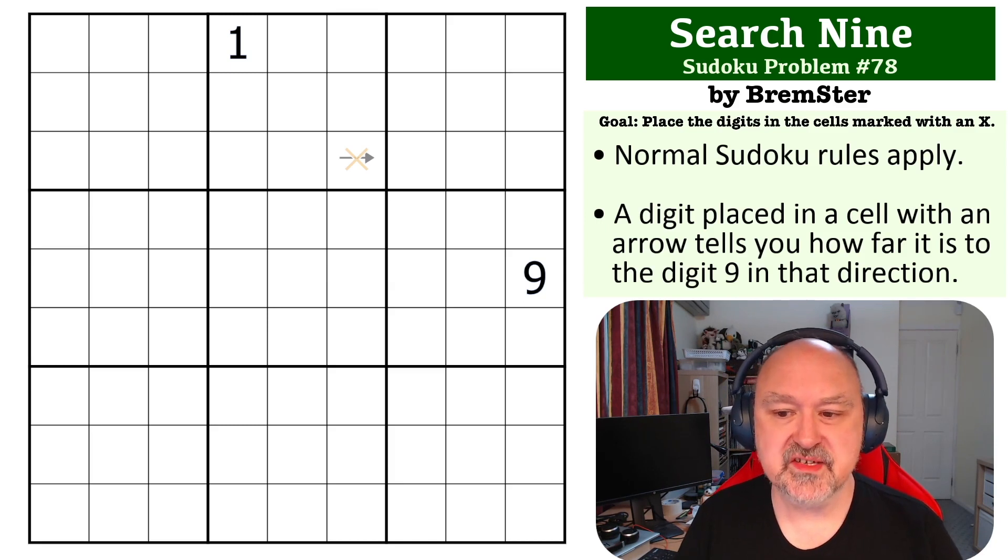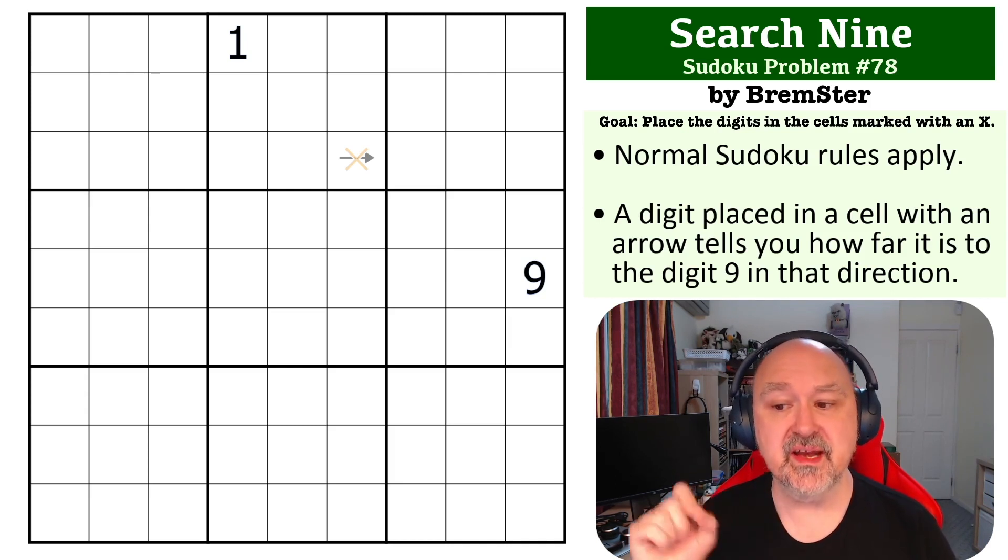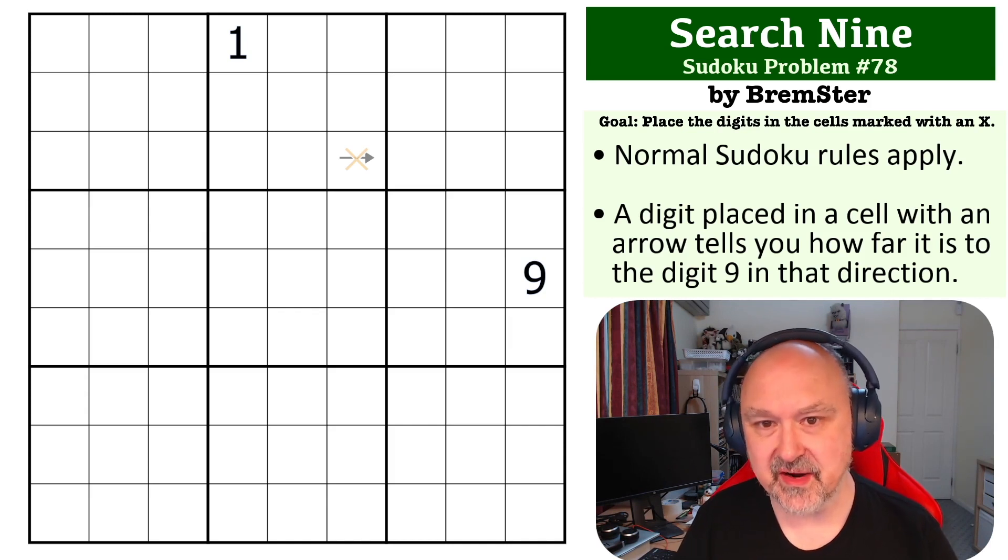So the way Search 9 works is that digits that are placed on arrows will point to the 9 in that direction and tell you how far away the 9 is in that direction.